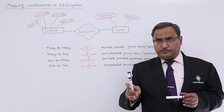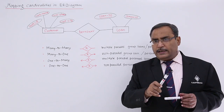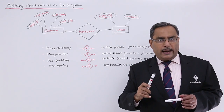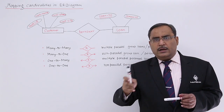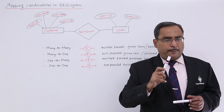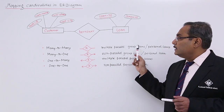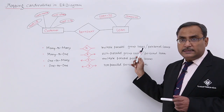So, to summarize many-to-many: against one Customer ID, there are one or more Loan IDs; and against one Loan ID, there are one or more Customer IDs. That is the respective inference.